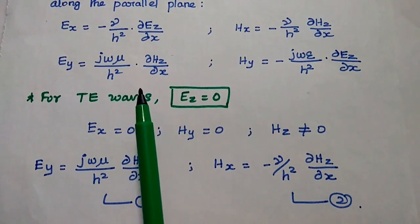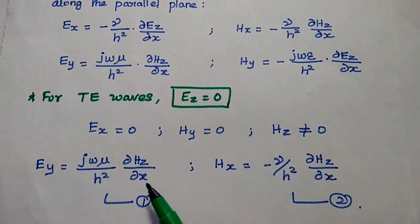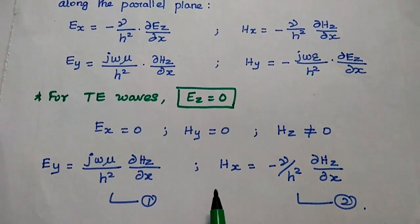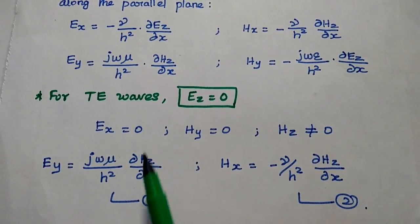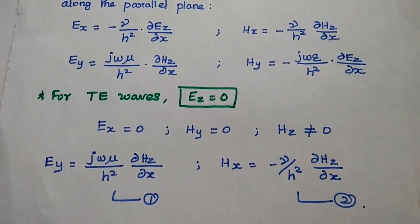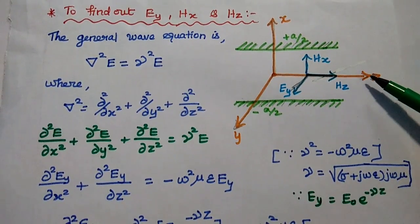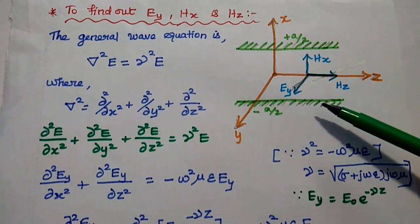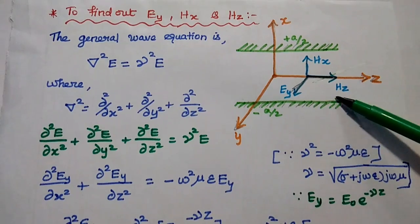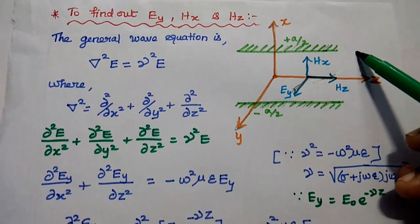The remaining field components are EY and HX. We are going to derive the field components HZ, EY, and HX. In TE waves, we consider EY as the first expression and HX as the second equation. This is the diagram representing TE waves propagating in the Z direction between two parallel planes. The field components are EY, HZ, and HX. The distance between the two parallel planes is A, and it extends from −A/2 to +A/2.